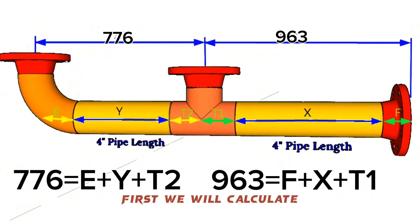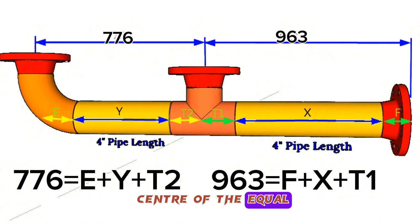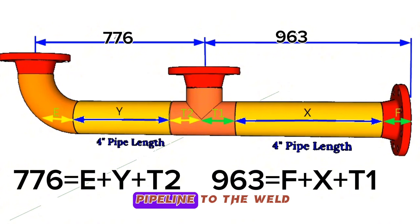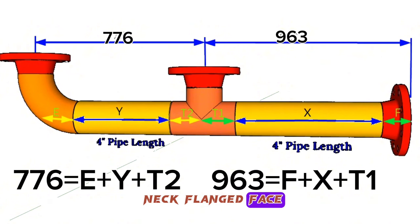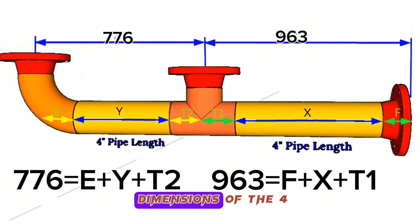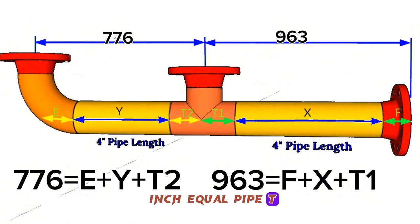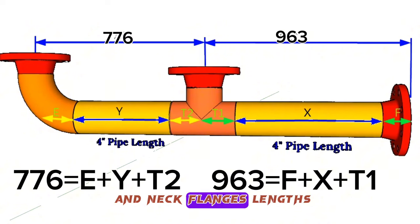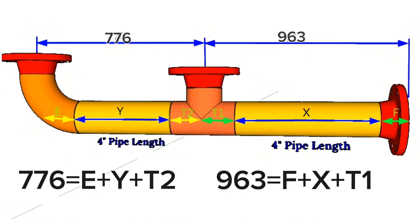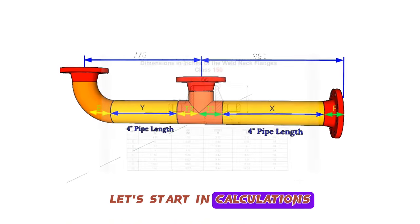First, we will calculate the distances from the center of the equal pipe tee in the 4-inch pipeline to the weld neck flanged face. To find this distance we need to find the dimensions of the 4-inch equal pipe tee and 4-inch weld neck flange lengths. Let's start the calculations.